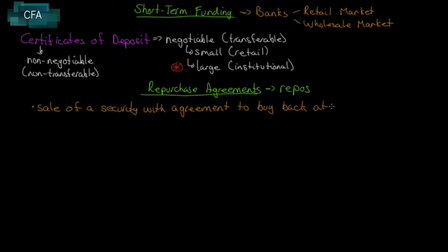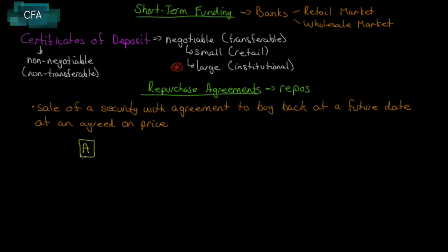It's basically the sale of a security with an agreement to buy it back at a future date at an agreed-upon price. Think of a pawn shop — you bring your guitar in, the pawn shop says 'I'll give you a hundred bucks for it on a two-week loan; when you come back you've got to buy it back for $120.' If you don't, the pawn shop keeps the guitar and sells it themselves.